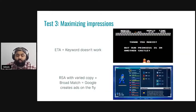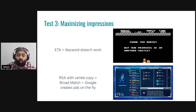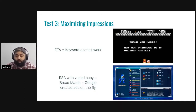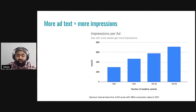The final test is maximizing your impressions. With ETAs, if the keyword didn't work, it didn't work. But an RSA with broad copy — as long as you're not fully pinning or making it too restrictive — especially paired with broad match, allows Google to create new ads on the fly, qualify you for more auctions, and show your ad to more people. That's really what RSAs are about: maximizing the number of impressions you can potentially get. We highly recommend having more text, as more text clearly means more impressions, so max out on your text.